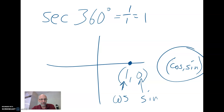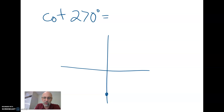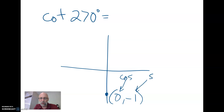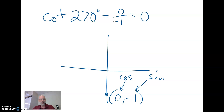Let's find the cotangent of 270 degrees. 270 degrees terminates right here on the unit circle — that's the point (0, −1). The x-coordinate is the cosine and the y-coordinate is the sine. The tangent is sine over cosine, so the cotangent is its reciprocal: cosine over sine. That gives us 0 divided by negative 1, which is 0.